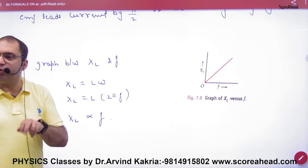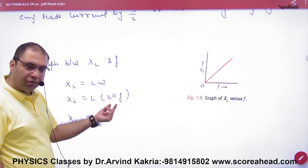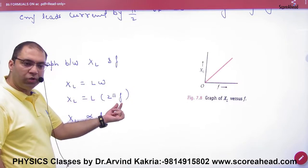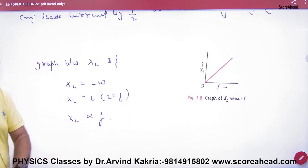Omega is 2 pi frequency. So XL is L into 2 pi frequency. XL is directly proportional to frequency. So the graph is a straight line passing from origin.